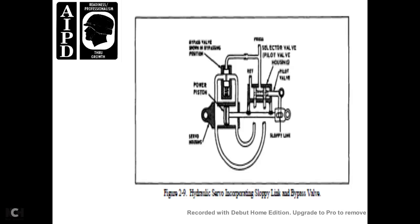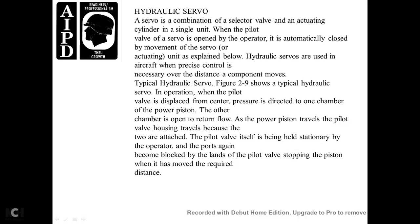Hydraulic Servo. Figure 2-9 shows the hydraulic servo incorporating a sloppy link and bypass valve. The hydraulic servo is a combination of a selector valve and an actuating cylinder in a single unit, with the pilot valve opened and automatically closed by the movement of the servo or actuating unit. The hydraulic servo is used on aircraft to provide precise control over the distance a component moves.